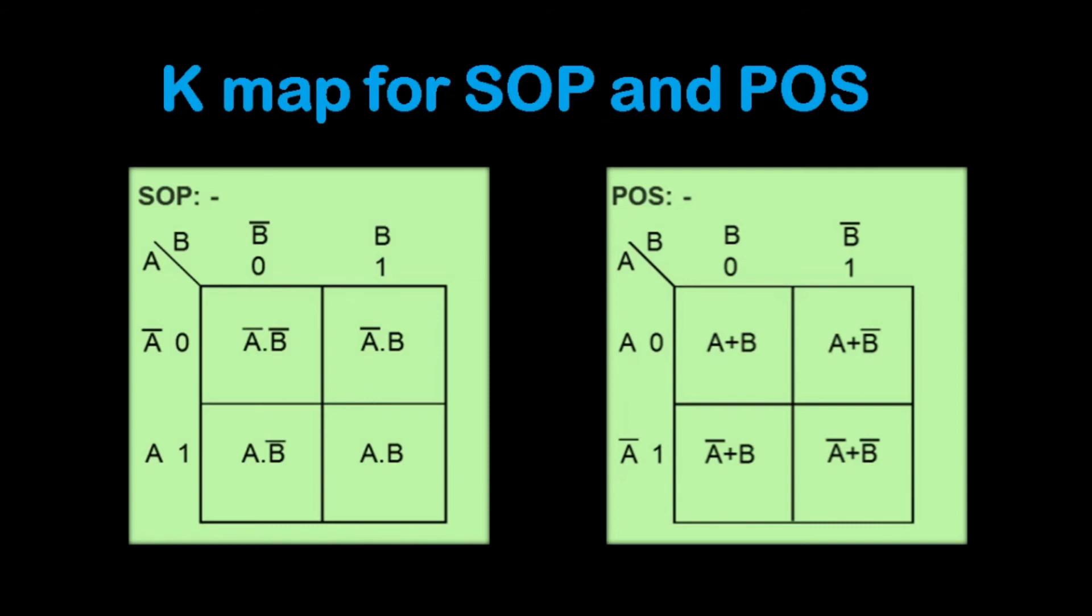In product of sum method, we have to use the plus symbol, which is the maxterm. So B, B dash are there. B is given as a 0 and B dash is indicated as 1, and that is the maxterm. And A and A dash. The true value is identified by 0 and complemented value is identified as 1. So you have to write in the first cell like A plus B, which is the maxterm for that cell. And the next is 0,1 combination is A plus B dash. Then 1,0 combination is A dash plus B. 1,1 combination is A dash plus B dash. So these are the methods of writing the K map for sum of products and product of sums.